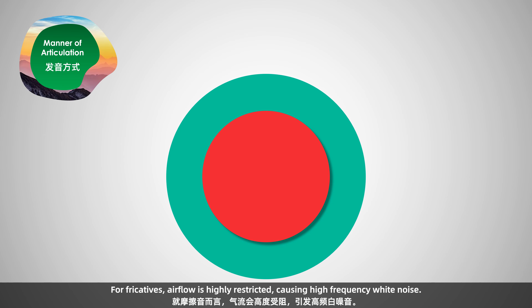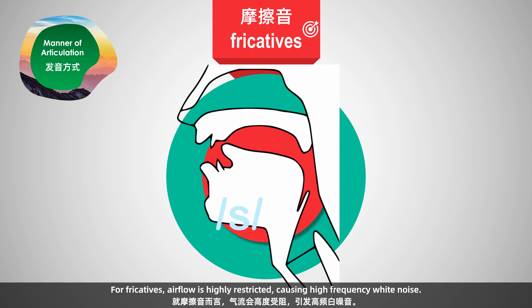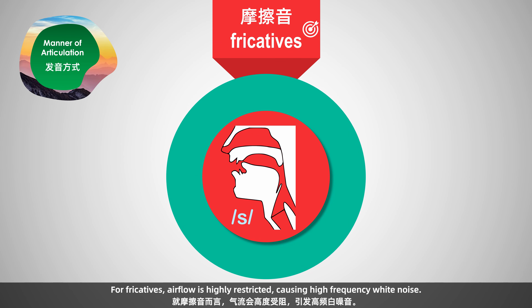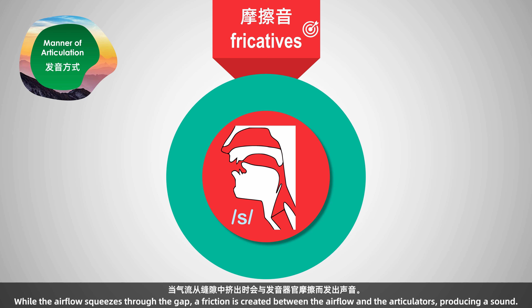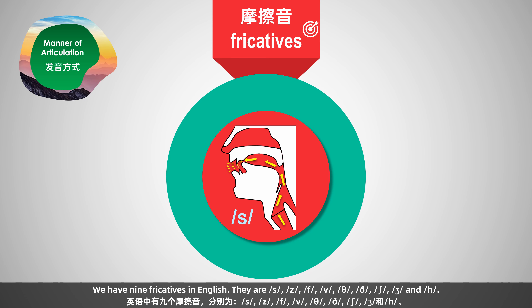For fricatives, airflow is highly restricted, causing high-frequency white noise. 发摩擦音的时候，发音器官并没有完全闭塞，会留有狭窄的缝隙。当气流从缝隙中挤出时，会与发音器官摩擦而发出声音。